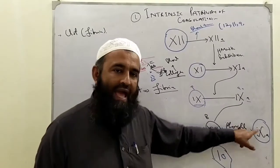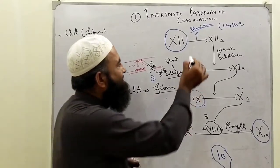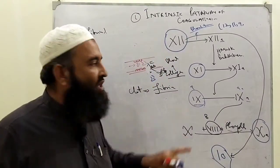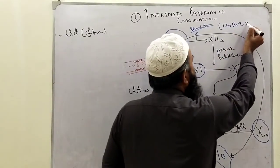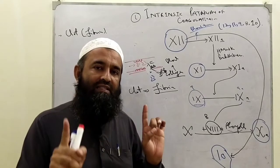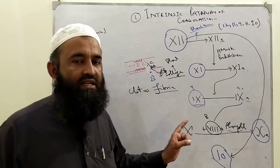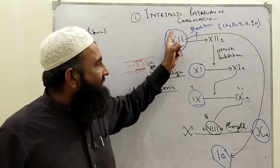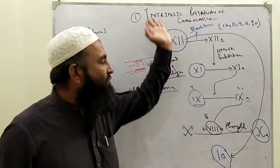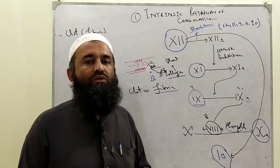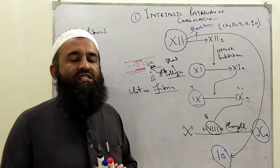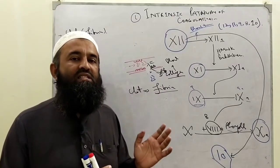So the ultimate result is: starting from factor 12, we ultimately reach factor 10 in activated form. The sequence is: 12, then 11, then 9, then with the help of factor 8, factor 10 is activated. Whenever factor 10 is activated, it marks the end of either the intrinsic or extrinsic pathway. This whole sequence is the intrinsic pathway. Today we have told you that when bleeding happens, our body has a system to stop the bleeding — we stop the blood by making it clot.